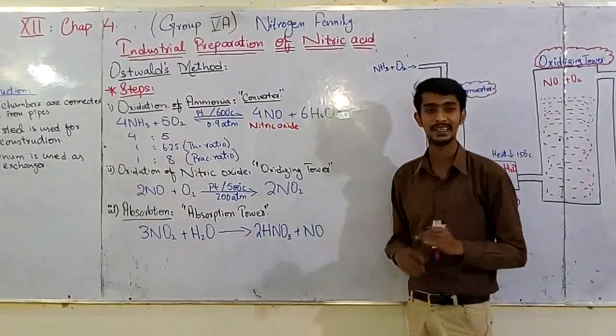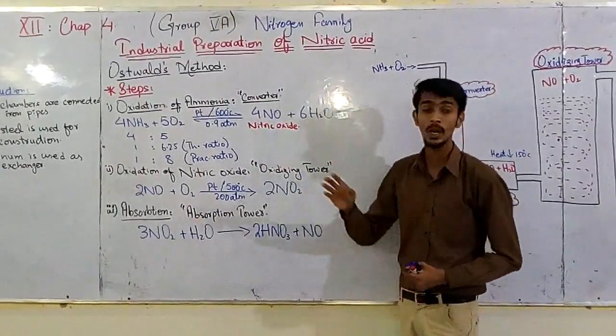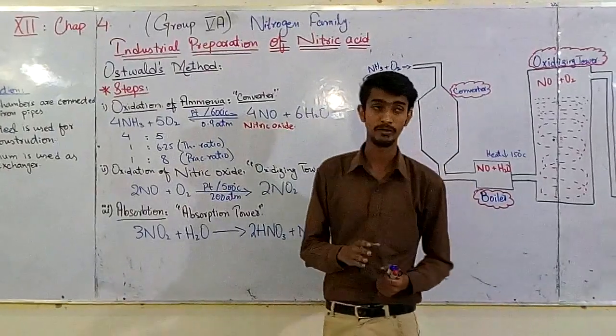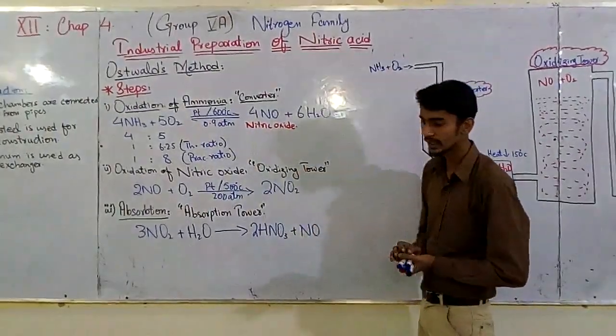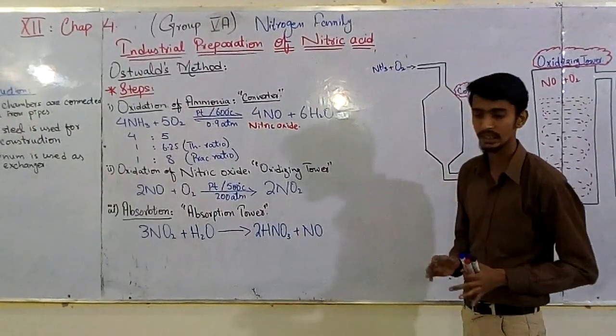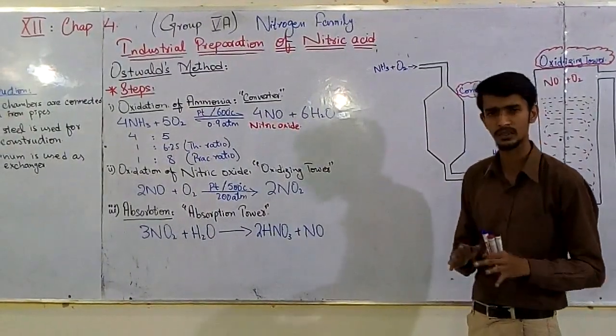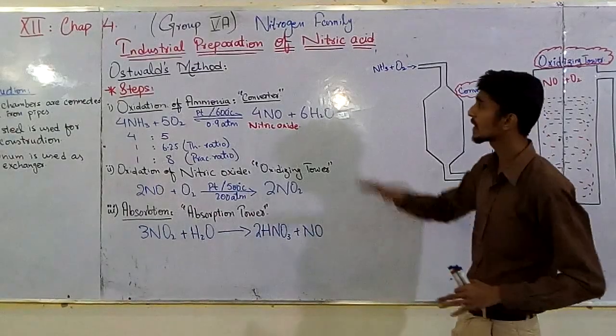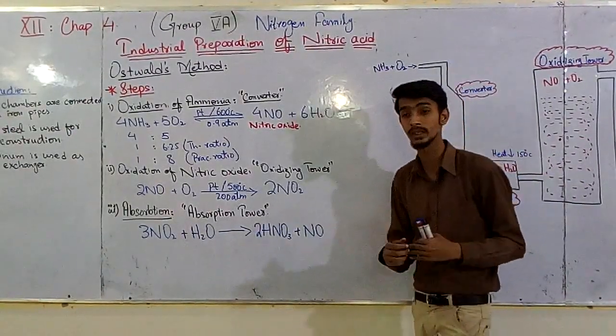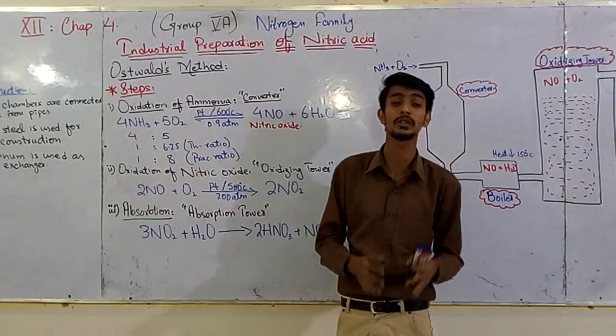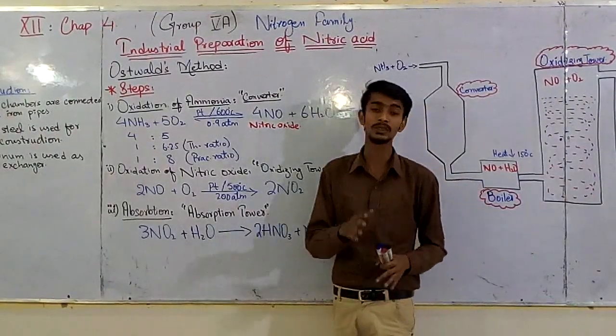Today we're covering chapter 3, second year chemistry chapter 4. We are talking about group number 5, which is the Nitrogen family. We know that the Nitrogen family has 5 electrons. We are discussing a commercial important product which is nitric acid.